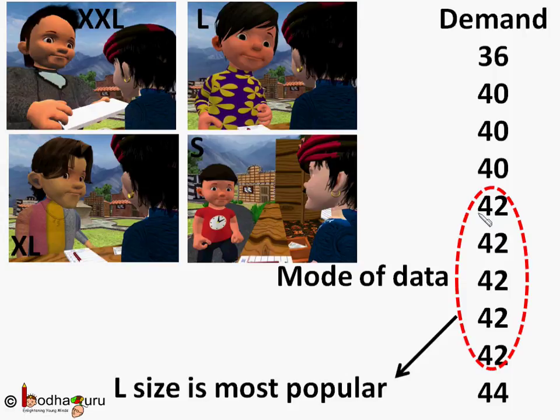For example, say a shop sold shirts on a given day. The sizes of the shirts sold is given here. Say the shopkeeper wants to find which size is sold most, so that he can order more of that.